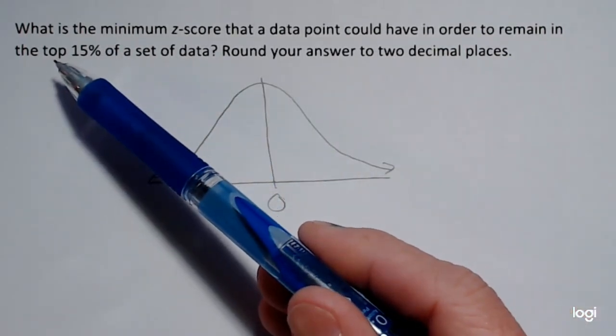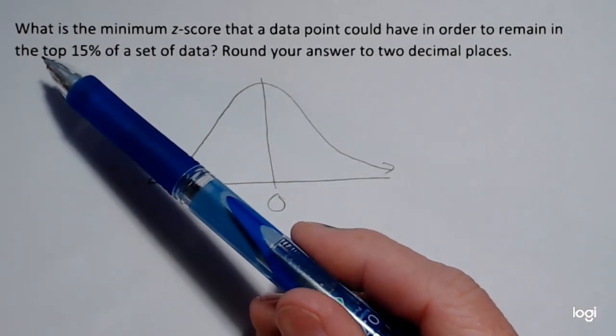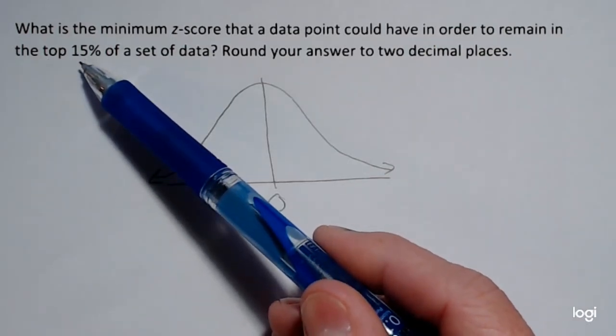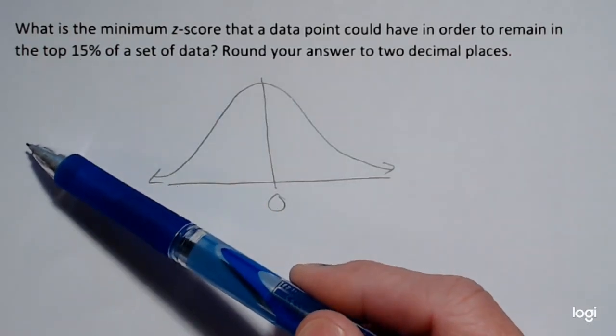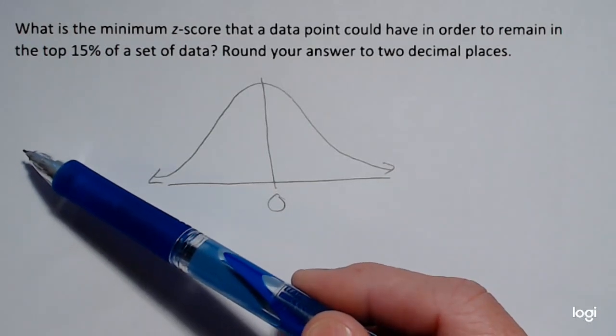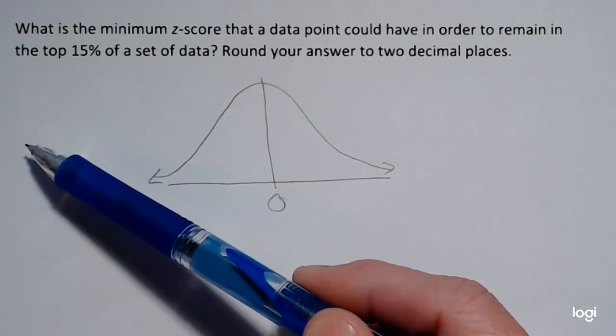So it's asking for the minimum z-score that separates the top 15% of the data from the lower 85%. Now, how do I know that 85% is below this particular z-score?